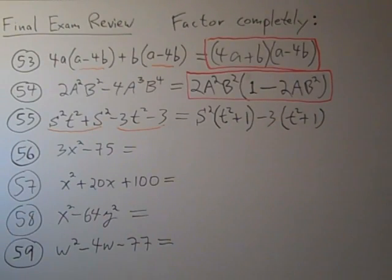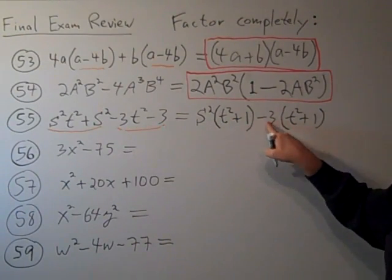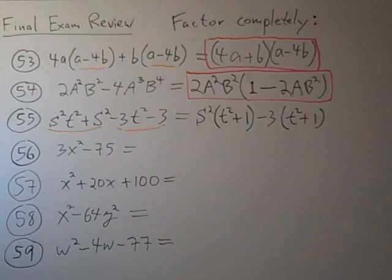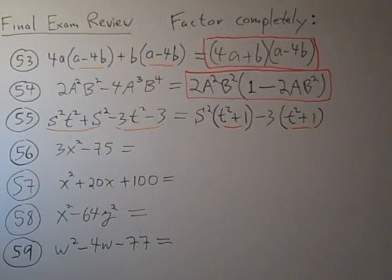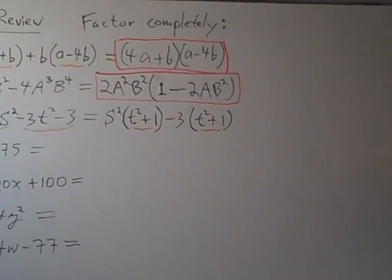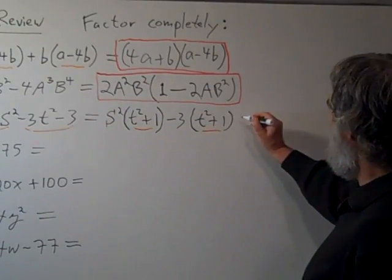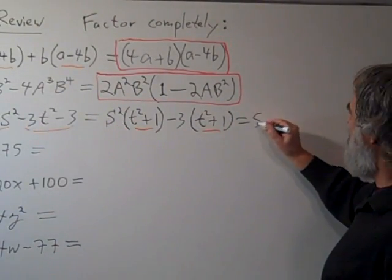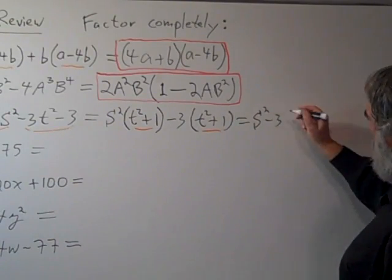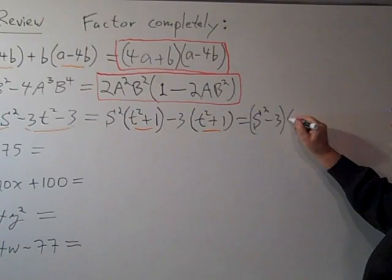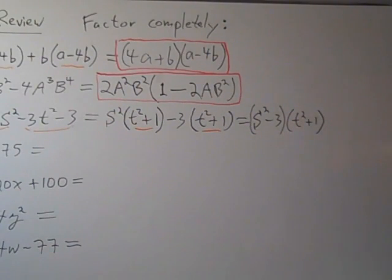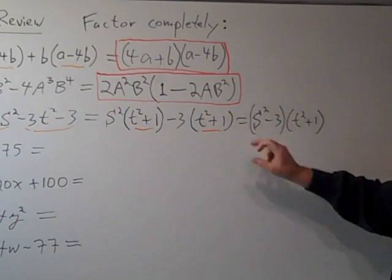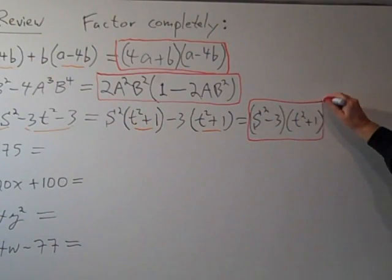Because this should be the same as this, with factor by grouping. Negative 3 times t squared is negative 3t squared. Negative 3 times 1 is negative 3. Now there's a common factor here of this t squared plus 1, because that's in both terms. So we can factor out that t squared plus 1. The result leaves behind an s squared minus 3. And that's then times this t squared plus 1 that we factored out. So there's the complete factorization of that polynomial. Problem 55.